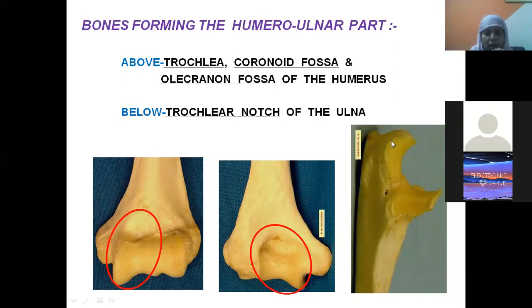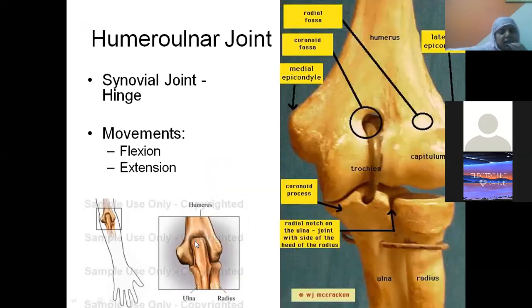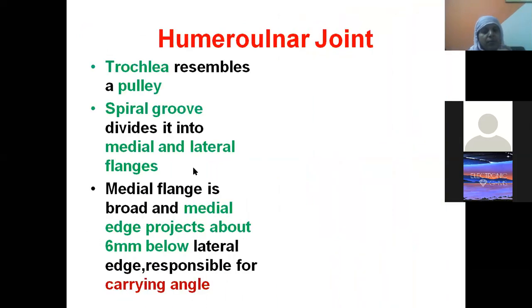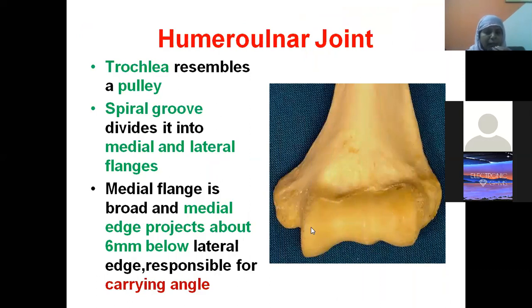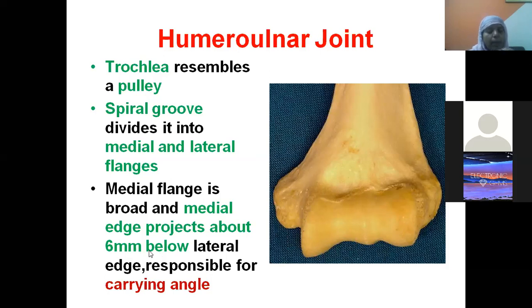During extension, the olecranon process fixes itself into the olecranon fossa of the lower end of the humerus. The trochlea resembles a pulley with a spiral groove dividing it into a medial flange and a lateral flange. The medial flange is broad and projects about 6 mm below the lateral flange, which is important for the formation of the carrying angle.